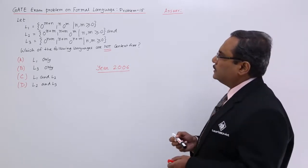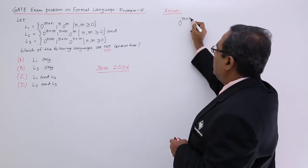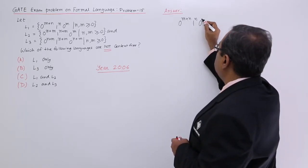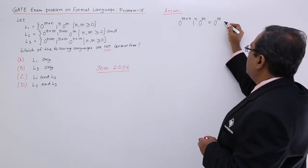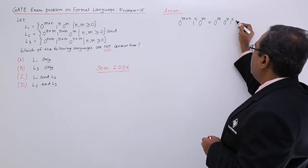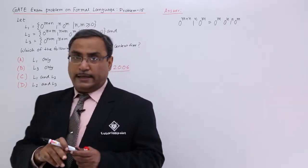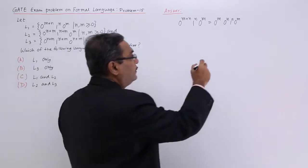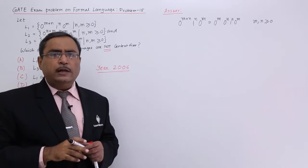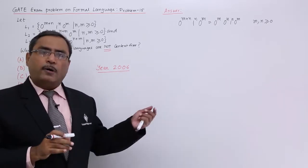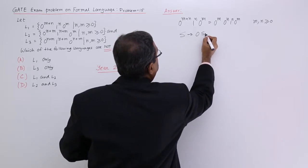If you consider the first one, it is producing string like 0 to the power m plus n, 1 to the power n, and then 0 to the power m. It means 0 to the power n, 0 to the power n, 1 to the power n, and 0 to the power m. And there is m and n both are greater than equal to 0. I think the context free grammar for this particular language we have formed earlier. So that means it will be something like this: S produces 0 S 0.